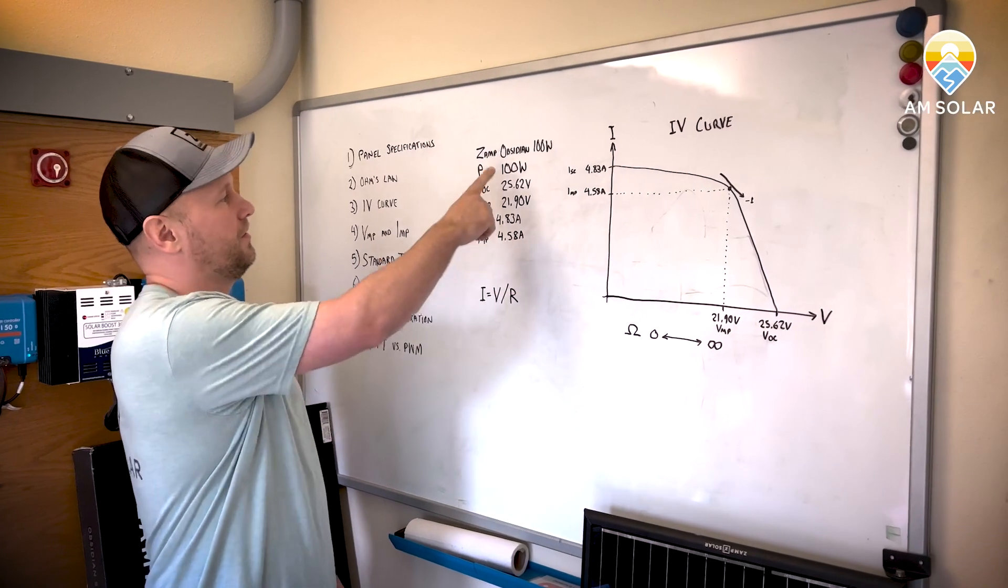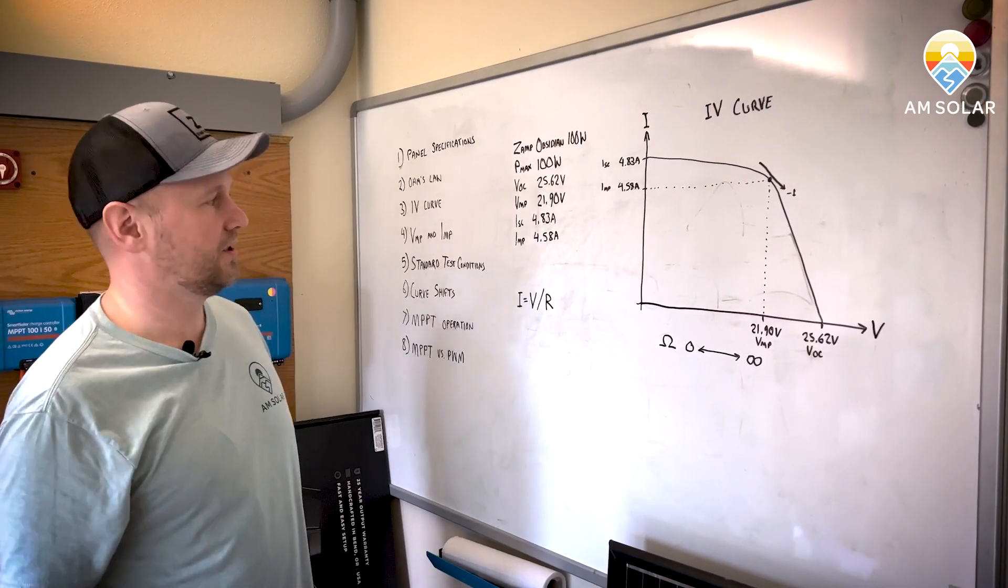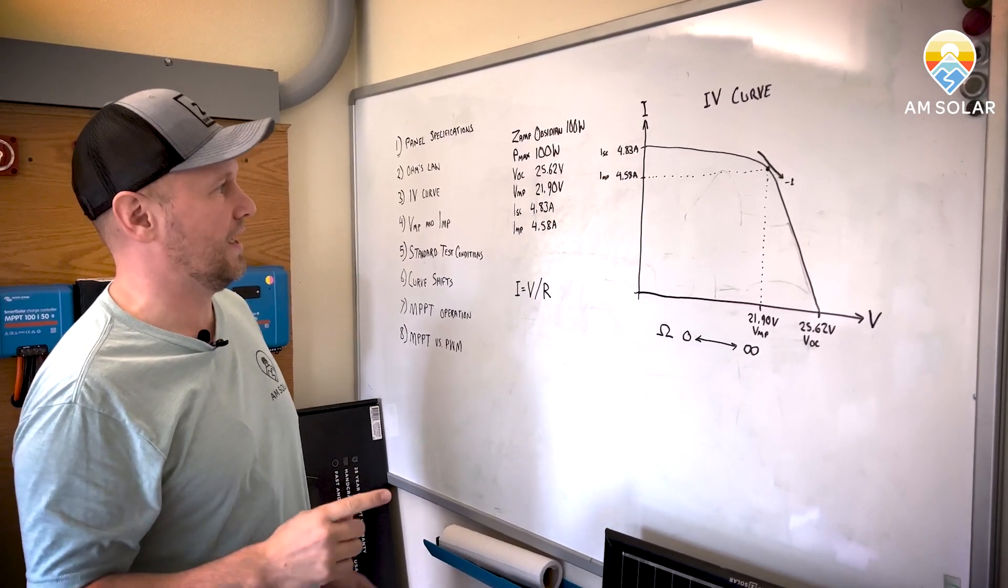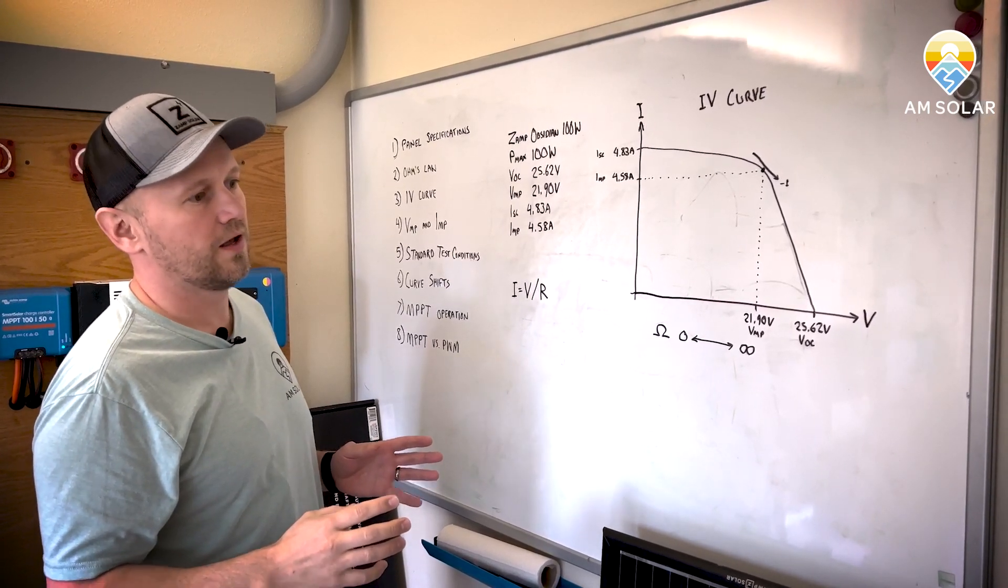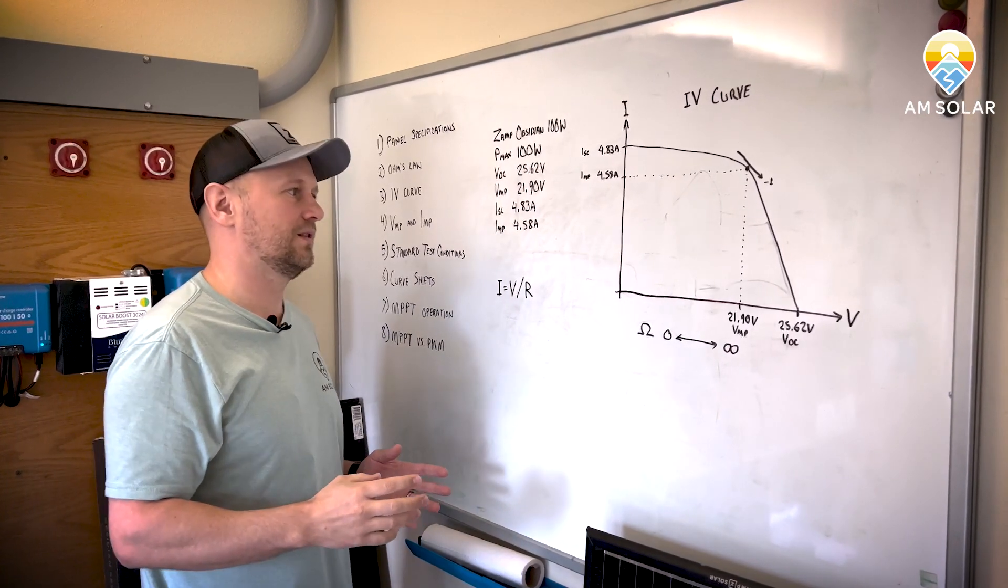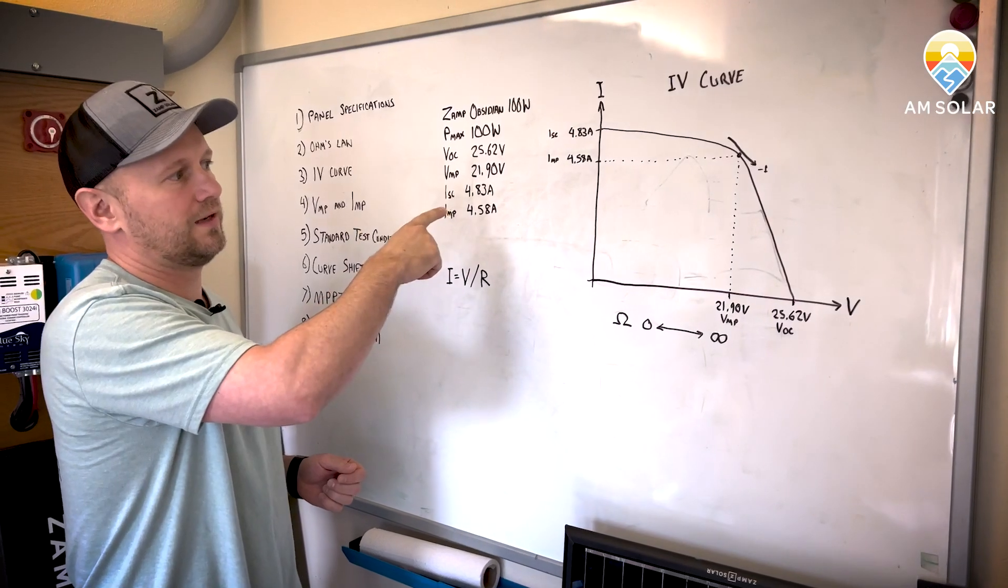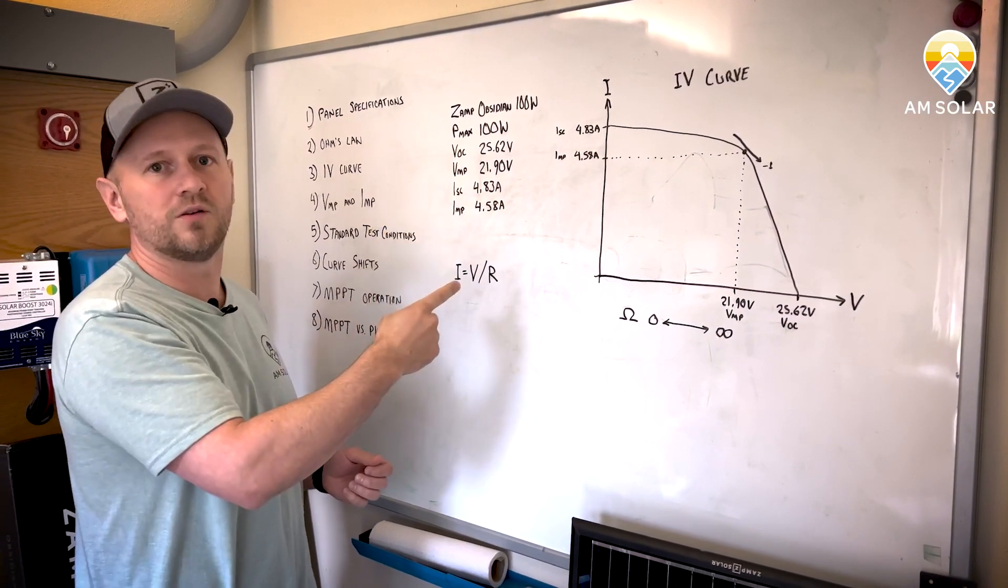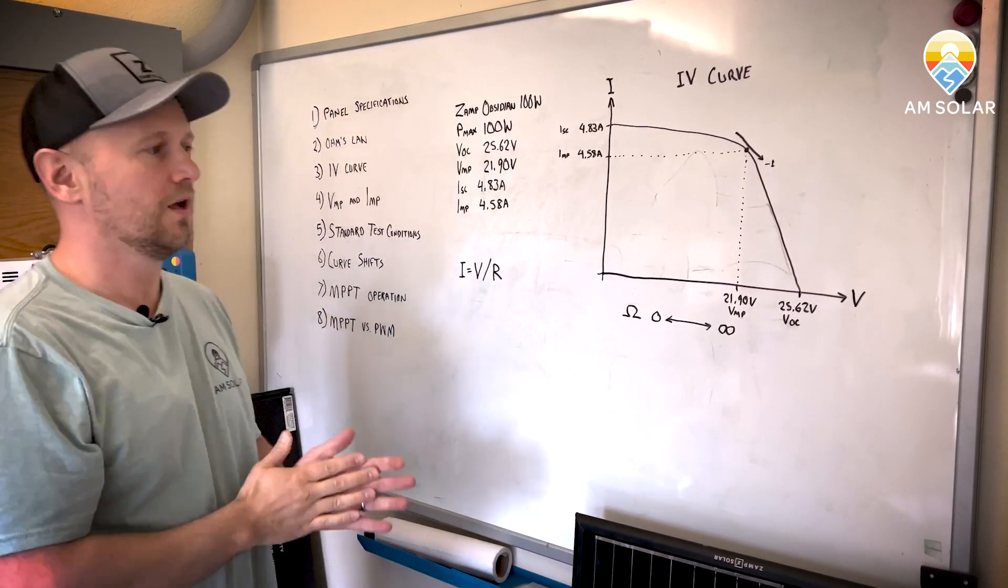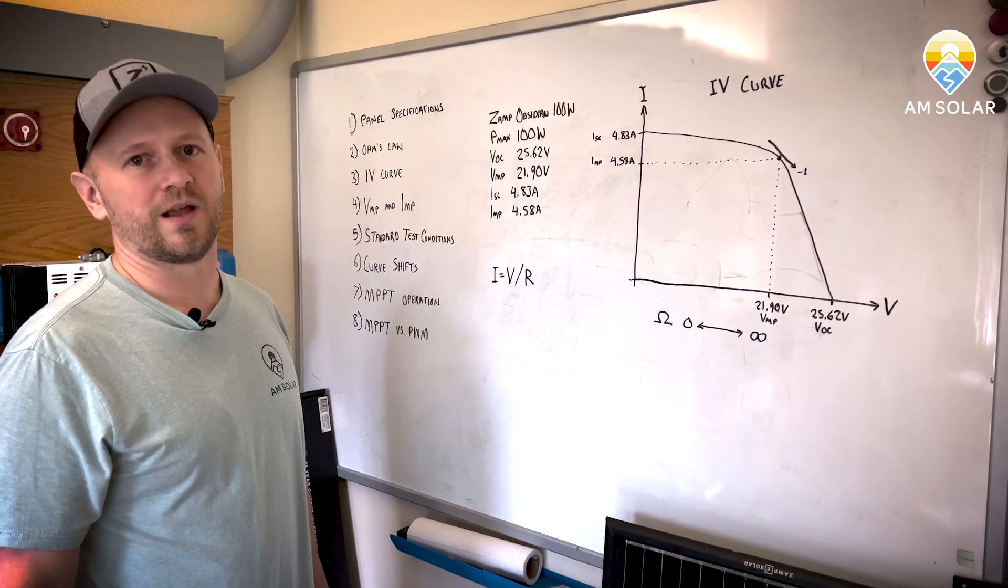So all of these values are measured at what they call standard test conditions, which is 25 degrees Celsius and a thousand watts per meter square of solar irradiance. So that means that you're not going to get these numbers when it's not that bright or if you're indoors or something like that. They pick 25 degrees Celsius, a thousand watts per meter square, because that's pretty similar to what you'd get on a really bright day.